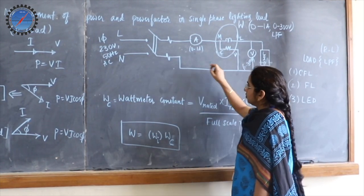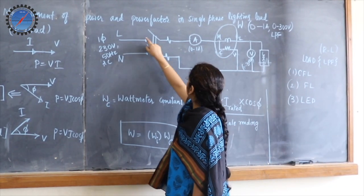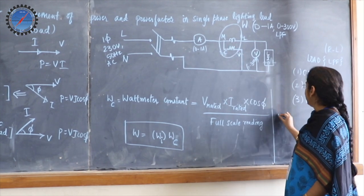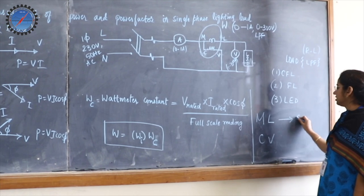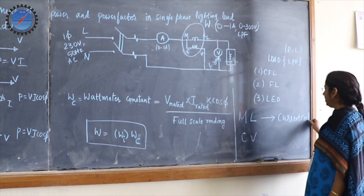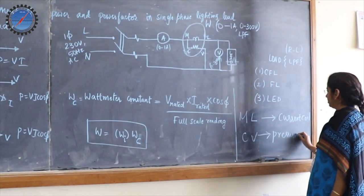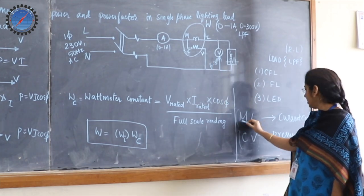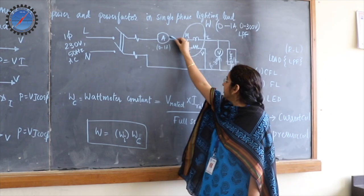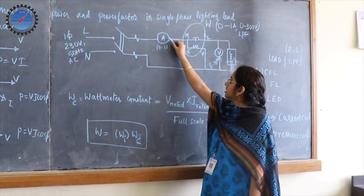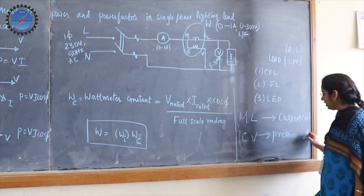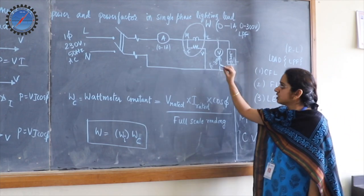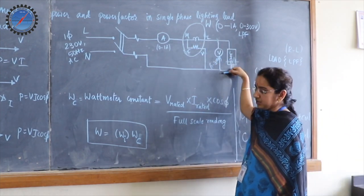To measure current through the network, we always connect an ammeter in series. The supply goes to the ammeter to record the current, then it goes to a wattmeter. A wattmeter has four terminals: M, L, C, and V. M and L correspond to the current coil terminals, and C and V correspond to the voltage coil or pressure coil terminals. M and L are connected in series with the network, and C and V are connected across the load terminals where voltage is to be sensed.